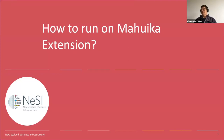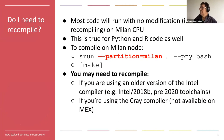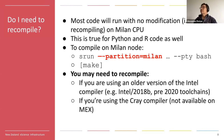How to run on Mahuika Extension: we have tried to make things as simple as possible. Except for rare cases, we think your code will just run as-is on Mahuika Extension. You don't need to recompile, though there might be a benefit in doing so. This should facilitate the transition. Python and R code from a conda environment or pre-compiled should run just as well on these new nodes, which are AMD rather than Intel — but essentially compatible with Intel ones as far as you're concerned as users.